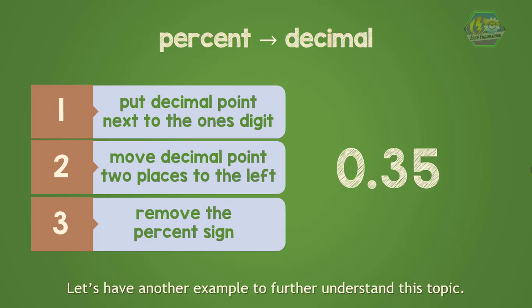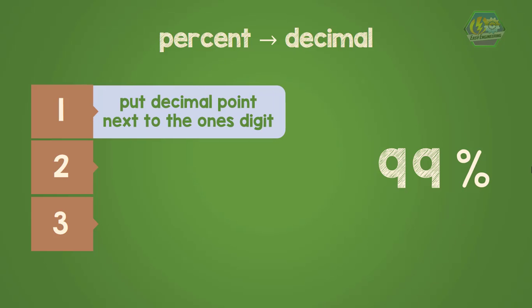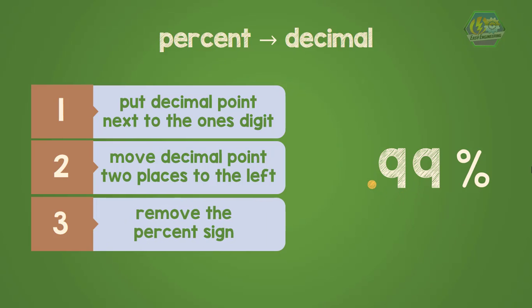Let's have another example. Convert 99 percent to decimal. First, put the decimal point next to the ones place. Next, move the decimal point two places to the left, away from the percent sign. Last, erase the percent sign. Therefore, 99 percent converted to decimal is 0.99.